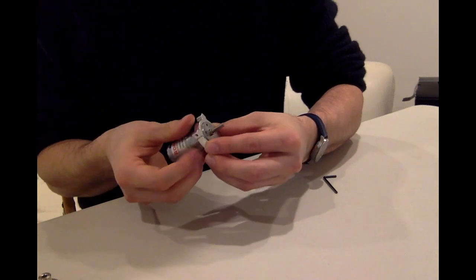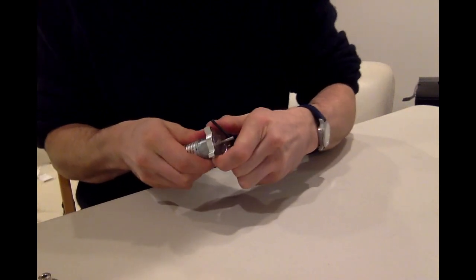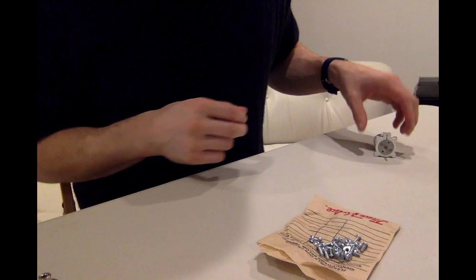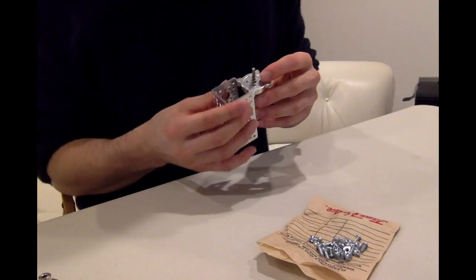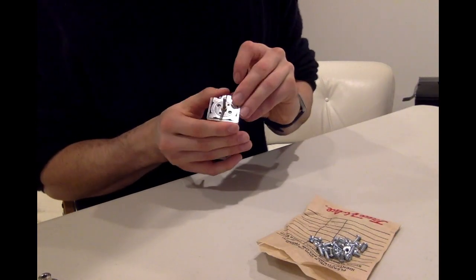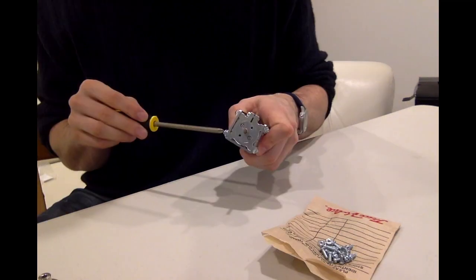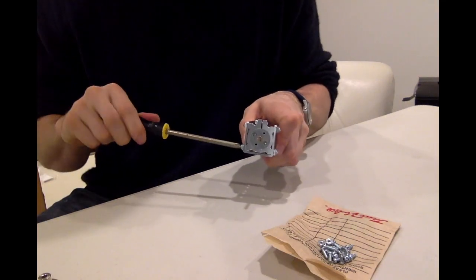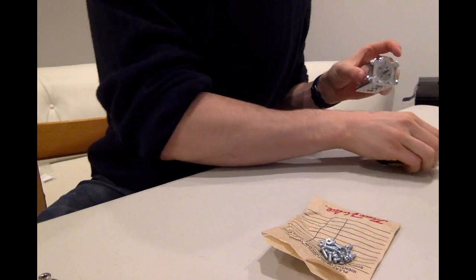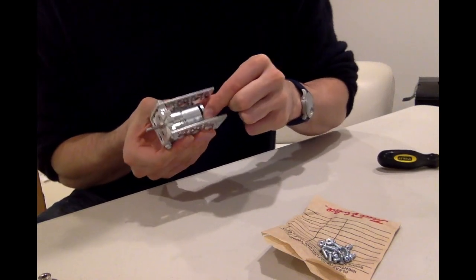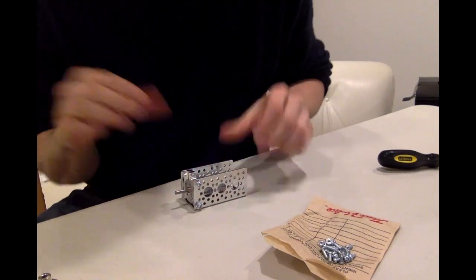So I'll just put the collar onto the motor, tighten that, and that is not going anywhere. So now we can attach this brace to the frame. Now our motor is nice and secure in this brace, in this frame.